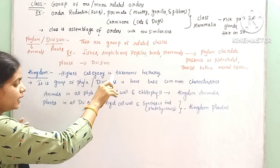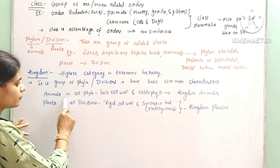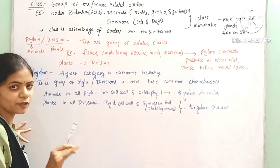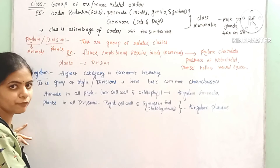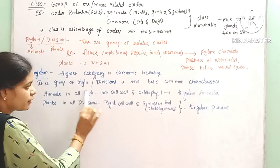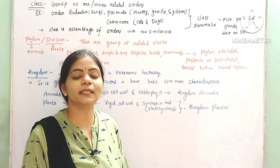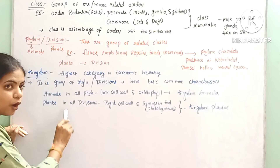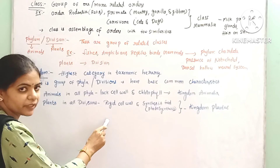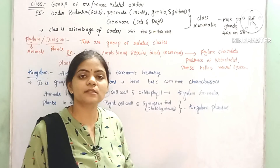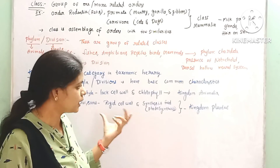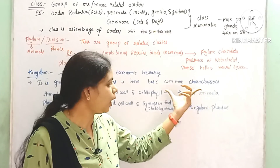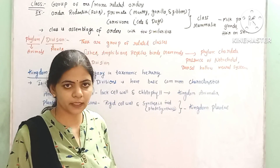All phyla in Animalia lack cell walls and chlorophyll, and cannot perform photosynthesis. All plants were kept under kingdom Plantae because they can synthesize their own food by means of photosynthesis. So all the animals were kept under kingdom Animalia and all plants under kingdom Plantae. These are the taxonomic categories.